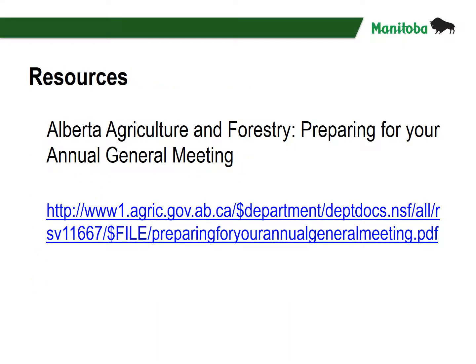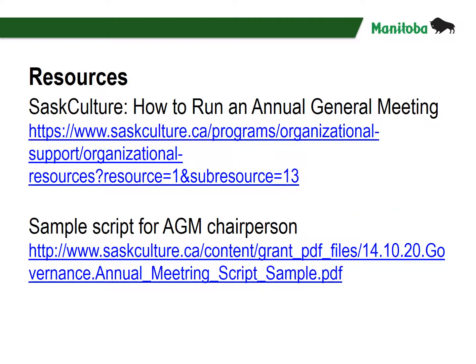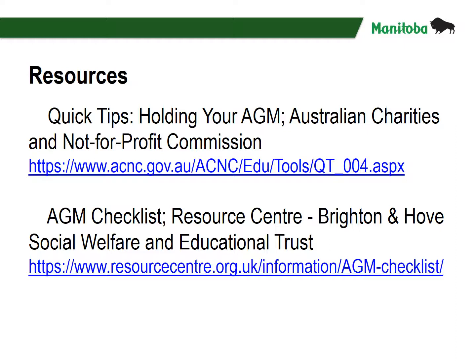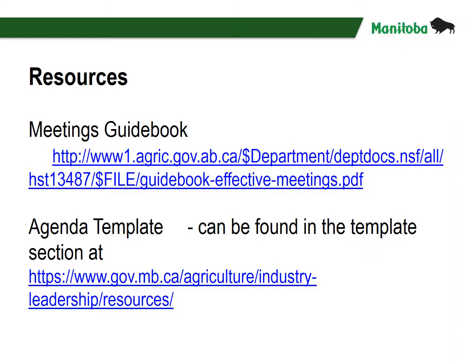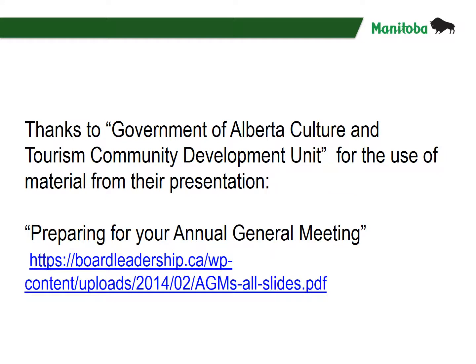Here are some resources that provide further information on annual general meetings: from Alberta Agriculture and Forestry, preparing for your annual general meeting; and from Saskatchewan Culture, how to run an annual general meeting and a sample script for the AGM chairperson. Although both of these resources are not from Manitoba or Canada, they do offer some excellent suggestions for planning your annual general meeting. Thanks to the Government of Alberta Culture and Tourism Community Development Unit for their use of material from their presentation preparing for your annual general meeting.